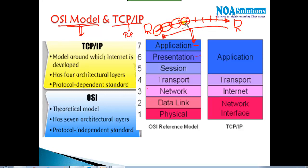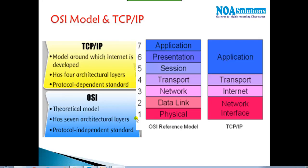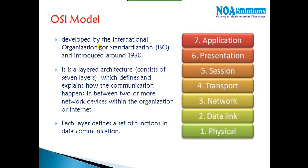TCP/IP is the model around which the internet is developed, and it has a four-layer architecture. The same communication process is divided into four layers in TCP/IP, whereas OSI is a theoretical model developed to explain how communication happens between any two networking devices. We learn the OSI model theoretically, but for practical implementations we use TCP/IP.